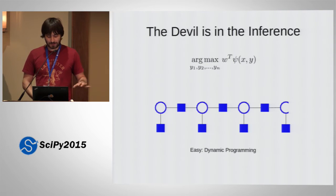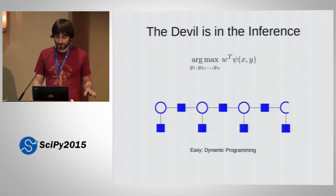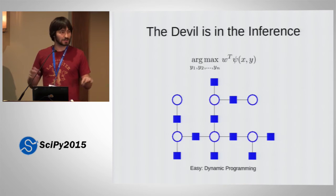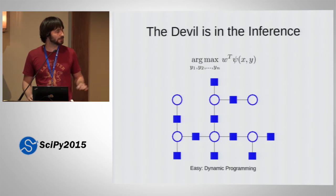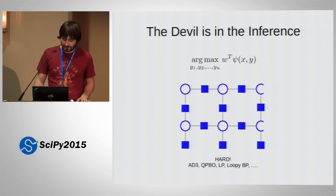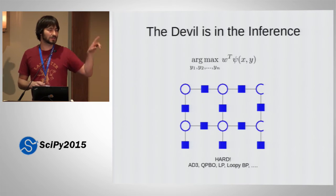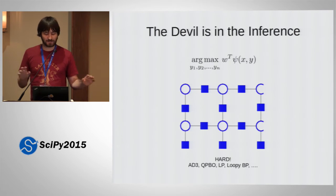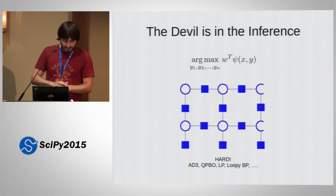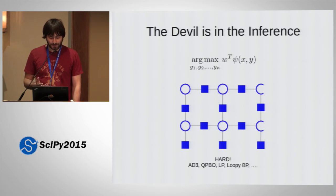If your model is a sequence, everything is easy — you can use dynamic programming. This is not really the use case that PyStruct was designed for. If your model is something like trees, the structure in your label space is also easy and you can do this with PyStruct very easily. PyStruct is really for grid models, like in images, where basically each pixel is connected to its four or eight surrounding pixels. There are a lot of loops in this graph, and that makes everything hard — the math goes bad. However, you can still solve this, and there are a couple of approximate solvers in PyStruct that can help you do this.